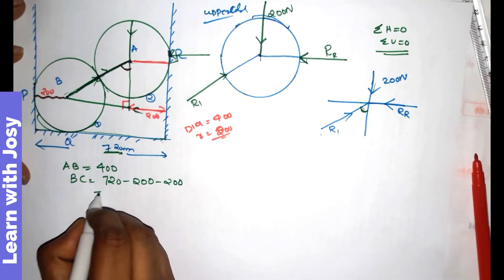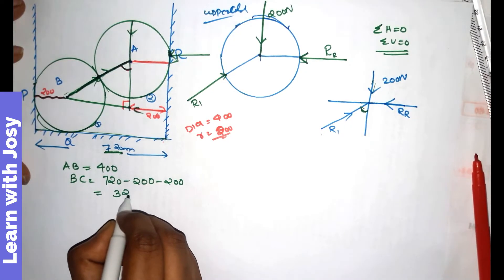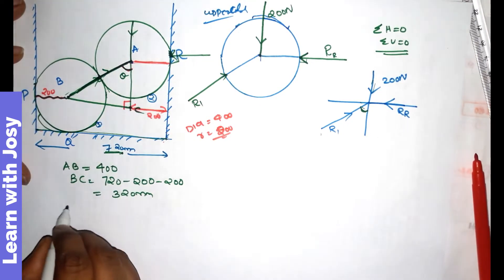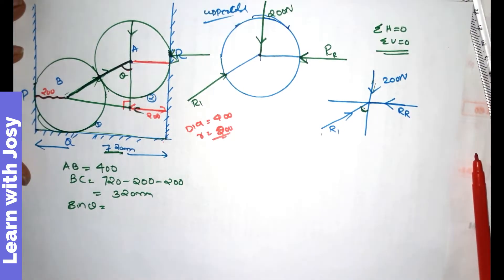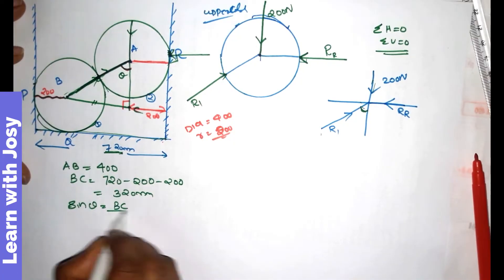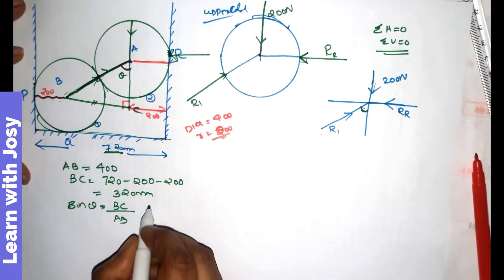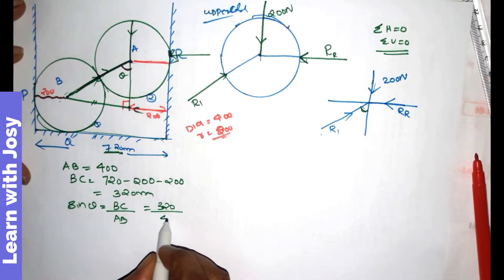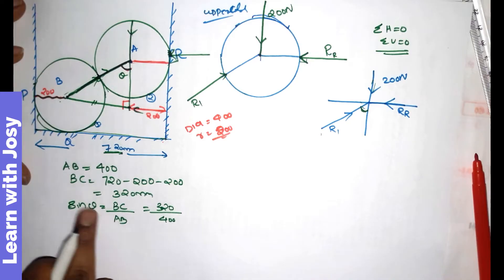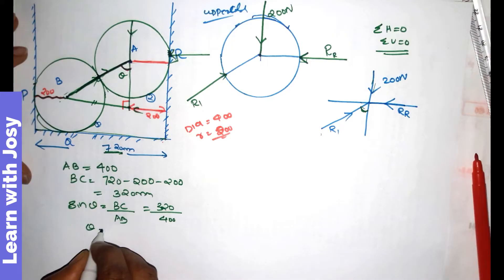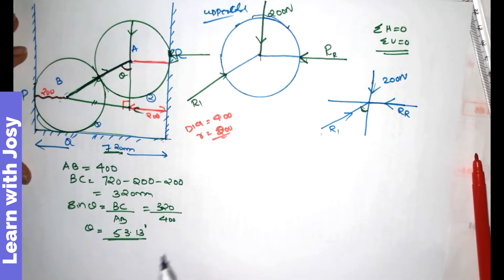If we call this distance, we call it 320. Now we find sin theta: sin theta equals opposite side divided by hypotenuse, which is BC divided by AB. That is sin theta equals 320 divided by 400.